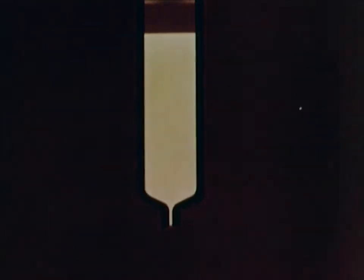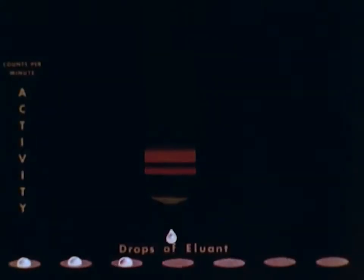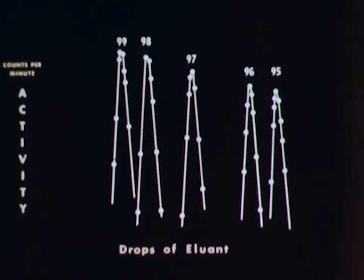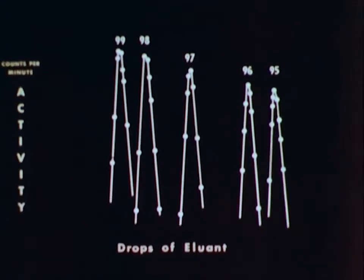You'll recall that when the four elements were first added to the column, they were mixed together. Now let us concentrate our attention on this mixture. As the elements passed down the column, they started separating. In time, the elements separated into bands. When the material came out of the column, certain drops of the solution contained a specific element, and some of the drops were eluent that did not contain any of the elements being separated. Radio assay data then allowed us to construct a graph of elution behavior.